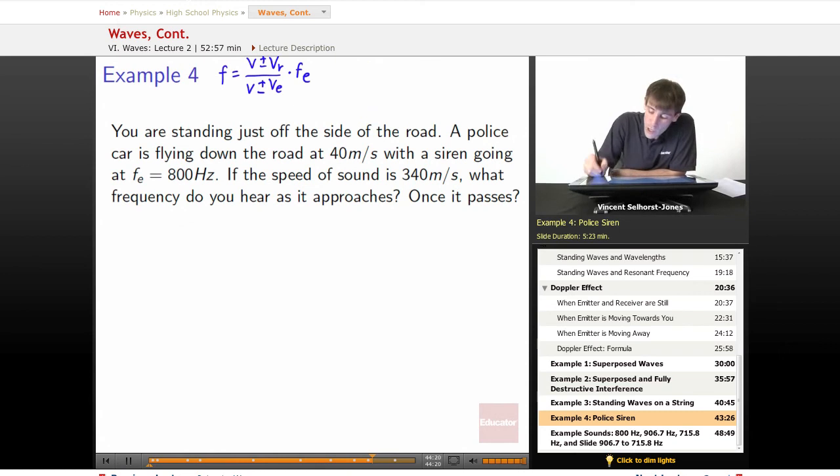So just to mark everything off from the beginning, velocity here, speed in the medium, 340 meters per second. That's the speed of sound here. The car is flying down the road at 40 meters per second, so the emitter is moving at 40 meters per second. The receiver, is the receiver moving? No, you're just standing there, so you've got 0 meters per second. And finally, frequency emitted is equal to 800 hertz.